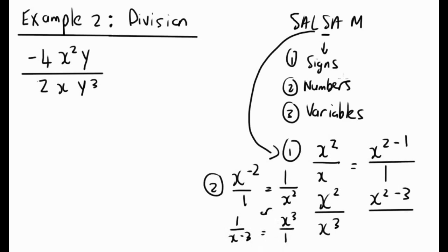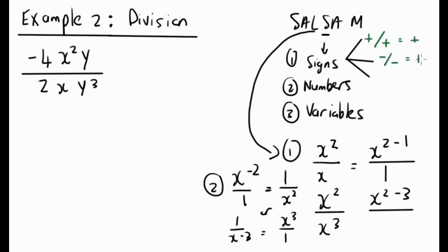For signs: same signs give a positive answer. A positive divided by a positive is positive, and a negative divided by a negative is positive. Different signs give a negative answer: a positive divided by a negative is negative, and a negative divided by a positive is negative. So it's important to sort out your signs first, then numbers, then variables.